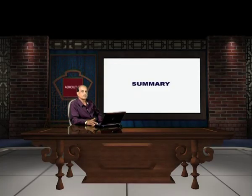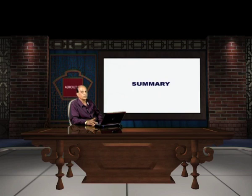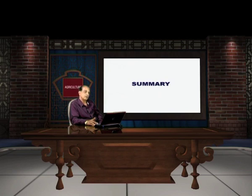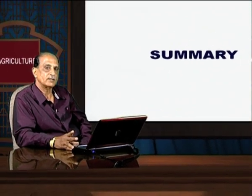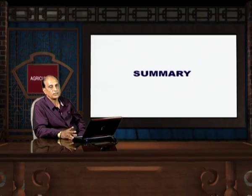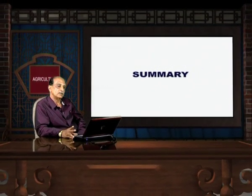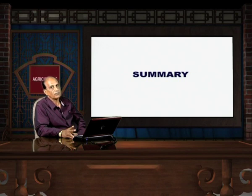Today, in this part of the program, we have discussed a problem based on determination of mode in respect of continuous series. After that we have discussed the geometric and harmonic mean. Then we have discussed the measures of dispersion and found out the limitations of central tendencies. In this part of the program we have discussed two methods for measurement of dispersion — the range and the interquartile range and quartile deviations. Thank you.